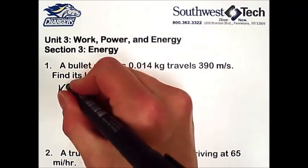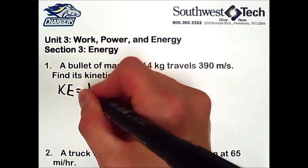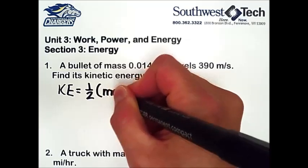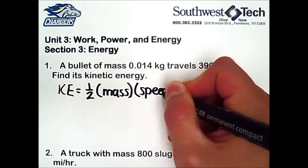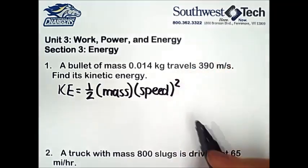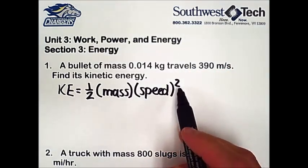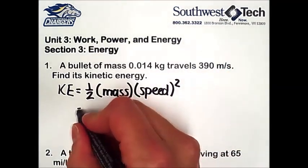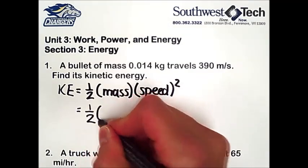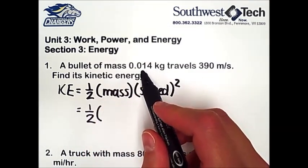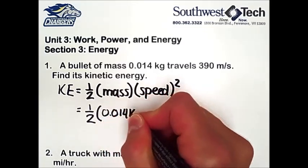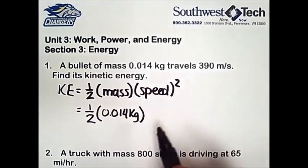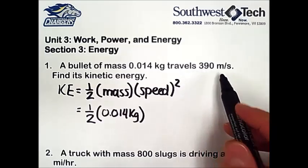The kinetic energy is equal to 1 half multiplied by the mass multiplied by the speed squared. Notice that it's only the speed that will be squared. So in this problem, our mass is 0.014 kilograms, and our speed is 390 meters per second.